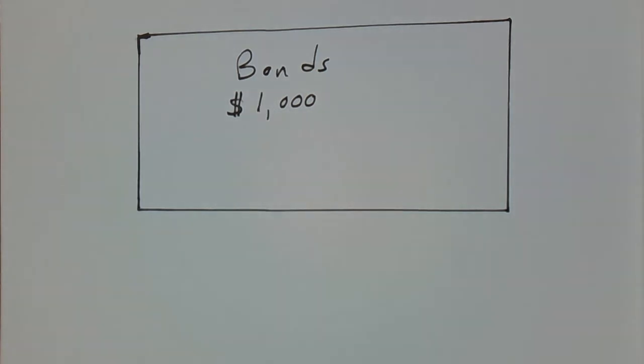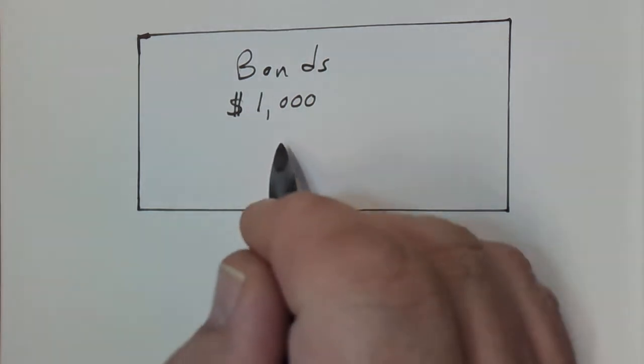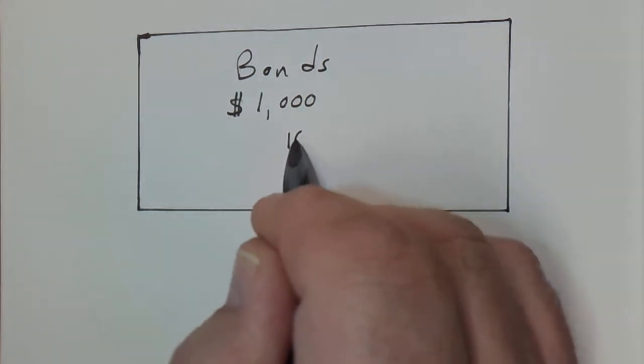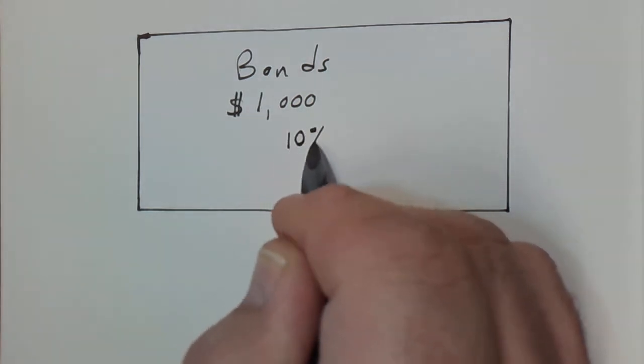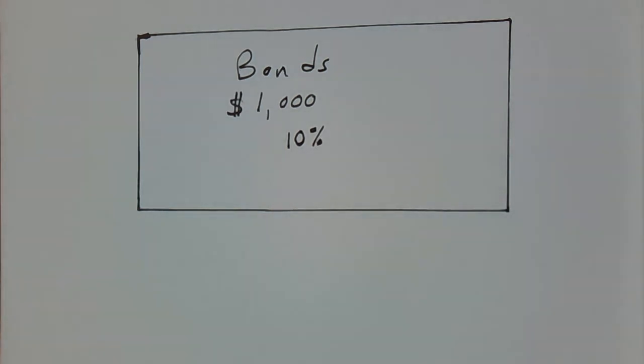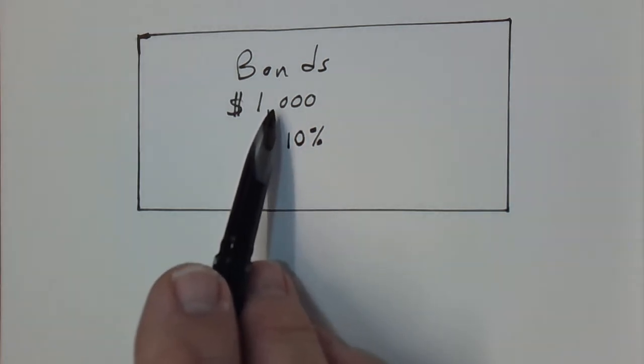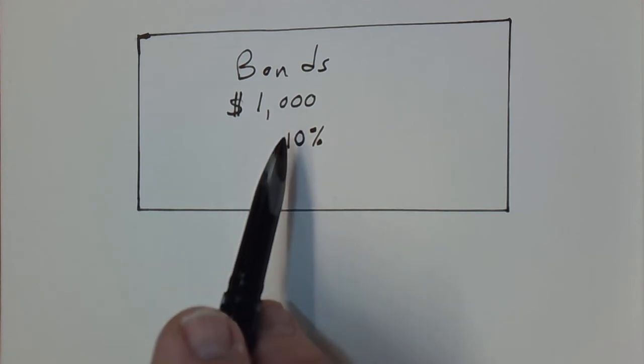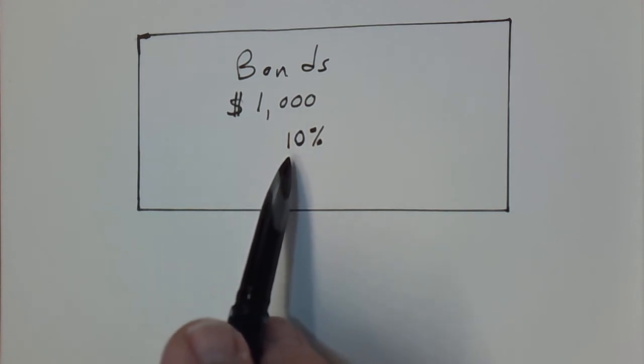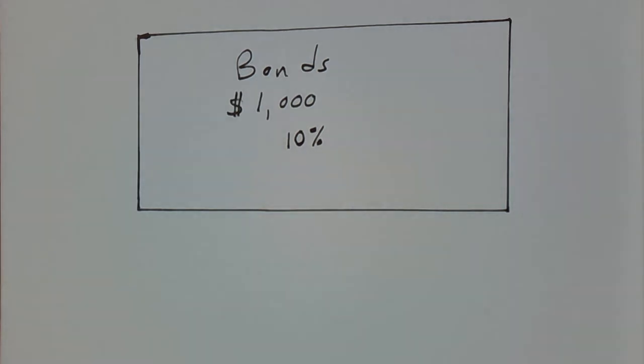There's also an interest rate associated with the bond, and that would be represented right on the bond. In this case, just to make the math easy, we're just going to say it's a 10% interest rate. That would be known as the coupon rate. So if the face value or par value of the bond is $1,000, and then we have the coupon rate that the bond pays, in this case I'm using 10%.